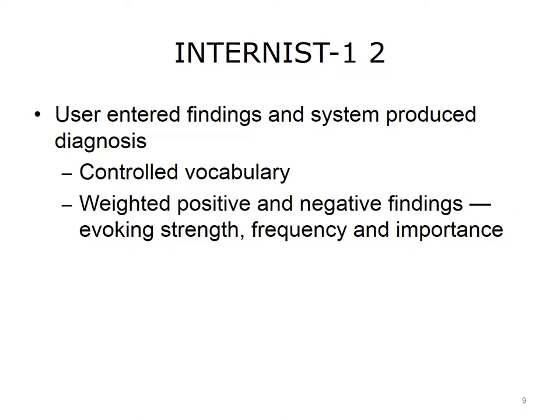In the Internist One system, the user enters the patient's findings — that is, the signs, symptoms, and lab tests or procedure results — into the system. The system used a controlled vocabulary. If a user wanted to enter the term heart murmur, for example, the system might list 40 kinds of heart murmurs, and the physician would have to pick the one that best described the patient's murmur. The system also could accommodate negative findings, such as things that would normally be present but were absent in this patient — for example, a patient who obviously had flu-like symptoms but did not have a fever. The system used a weighting system that combined the data to arrive at a diagnosis. The weighting terms included evoking strength — how strongly a given finding suggested a particular disease — frequency, which was how often you would expect to see the findings if the patient had the disease, and importance, which was how significant the finding was.